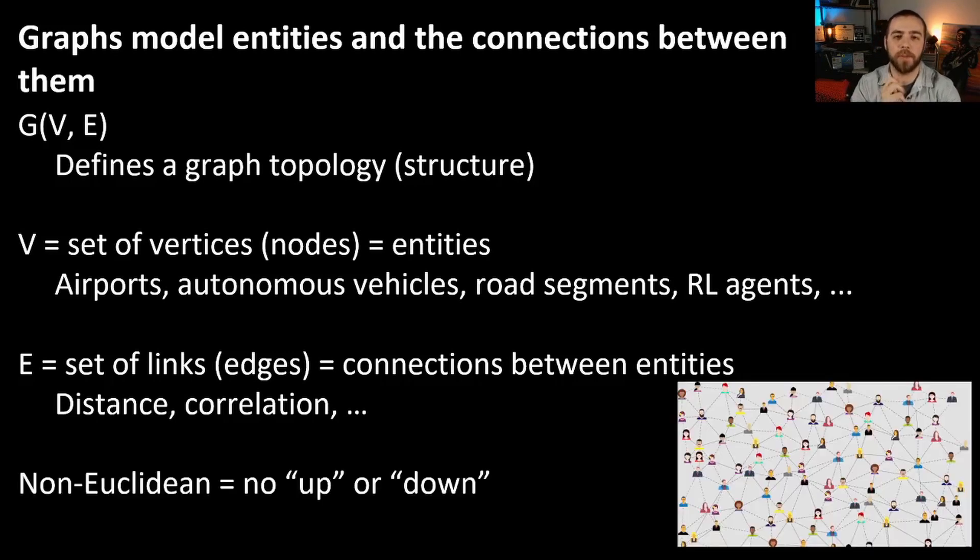And what's interesting about graphs is that they don't rely on a Euclidean frame of reference. So there is no real way to define an up or down in graphs. So like in a social network, as an example, there's no real up direction, right? There's no north, there's no east and west. There's just kind of people and their connections. So this is why graphs are a very interesting type of model.